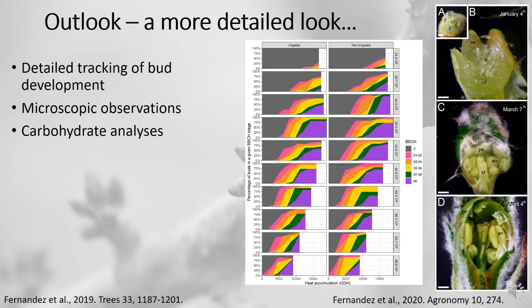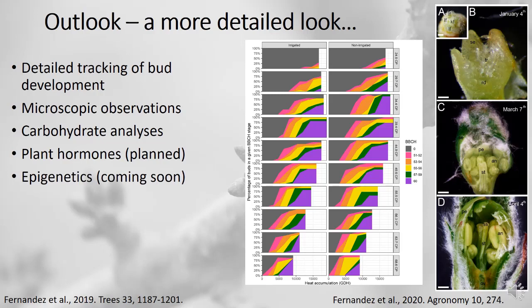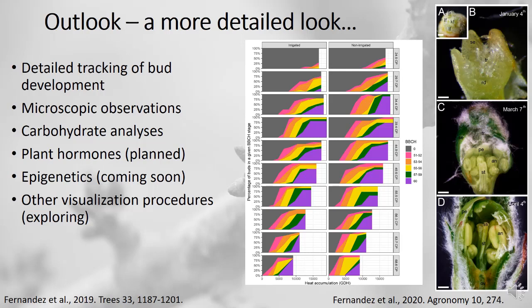We've started carbohydrate analysis to quantify when concentrations of various carbohydrates — storage forms and mobile forms — begin changing. We're also exploring ways to analyze plant hormones and other methods of visualizing changes in buds. We'll soon have a PhD student starting work on epigenetics of dormancy, which I'm very excited about. There are also other visualization procedures like CT scans of buds — many options that haven't really been explored yet, so there's a lot of exciting work coming up.